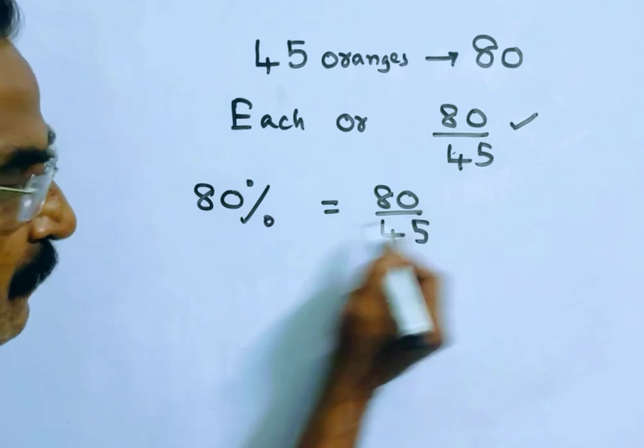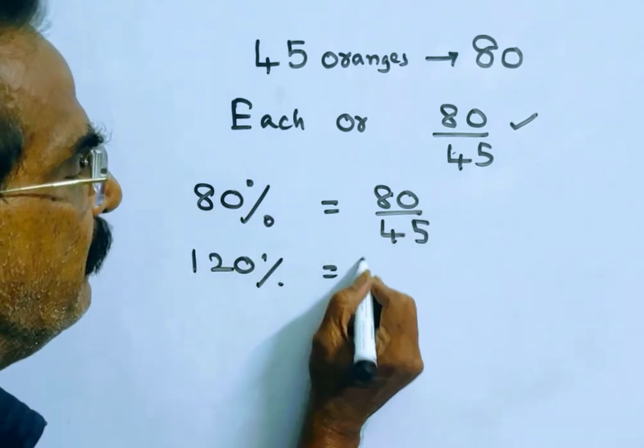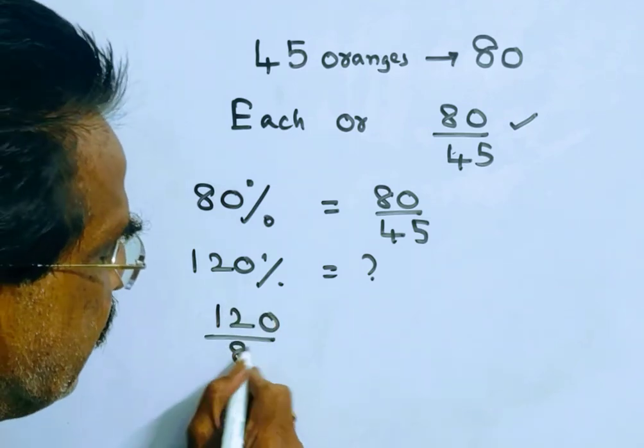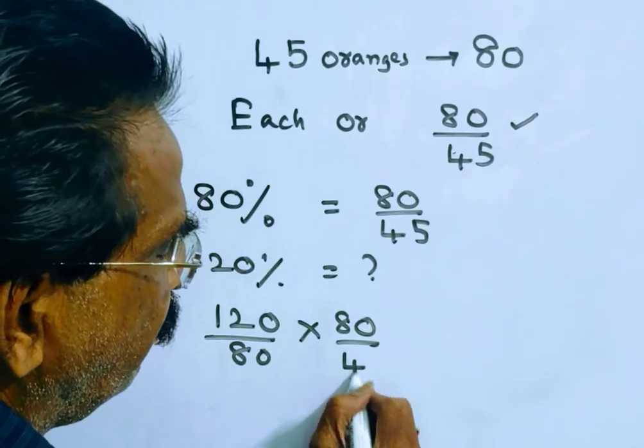Friends, 80% is equal to this much. Then what is 120%? 120 over 80 into 80 by 45.